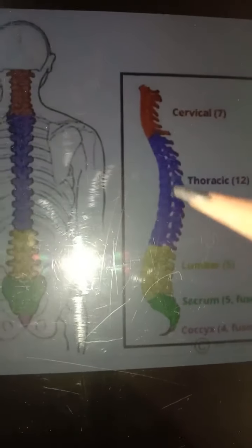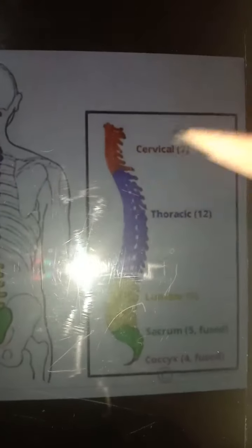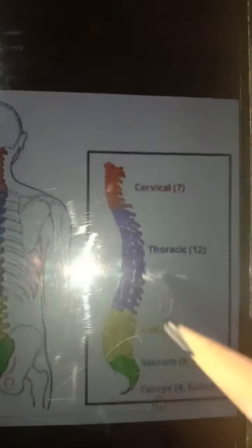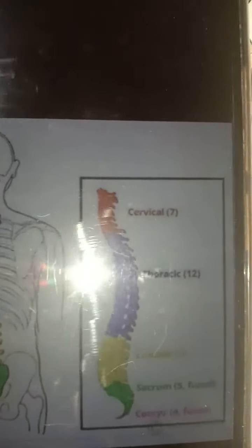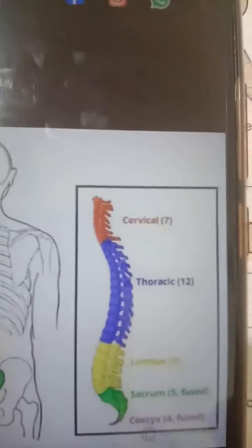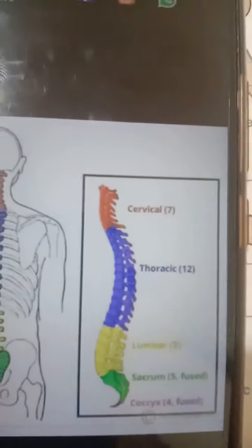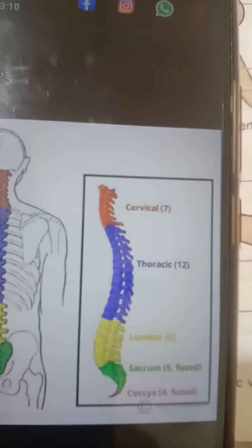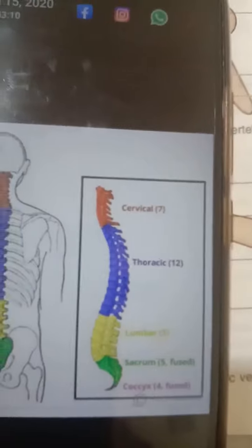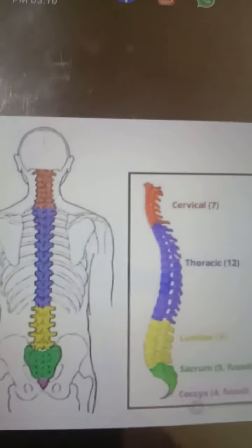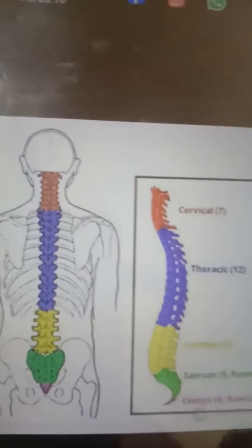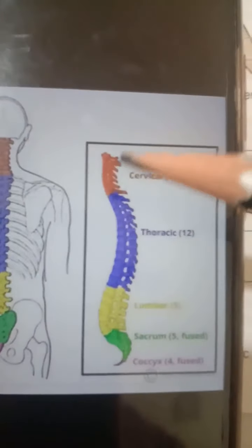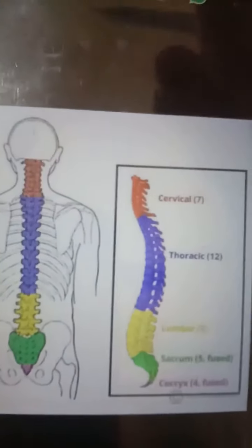In this diagram you can see the vertebral column. The red color shows the 7 cervical vertebrae, the blue color shows the 12 thoracic vertebrae, then the lumbar vertebrae which are 5 in number, the sacral in green color which are 5 in number, and the 4 coccygeal vertebrae. This is the posterior view and the lateral view of the vertebral column.